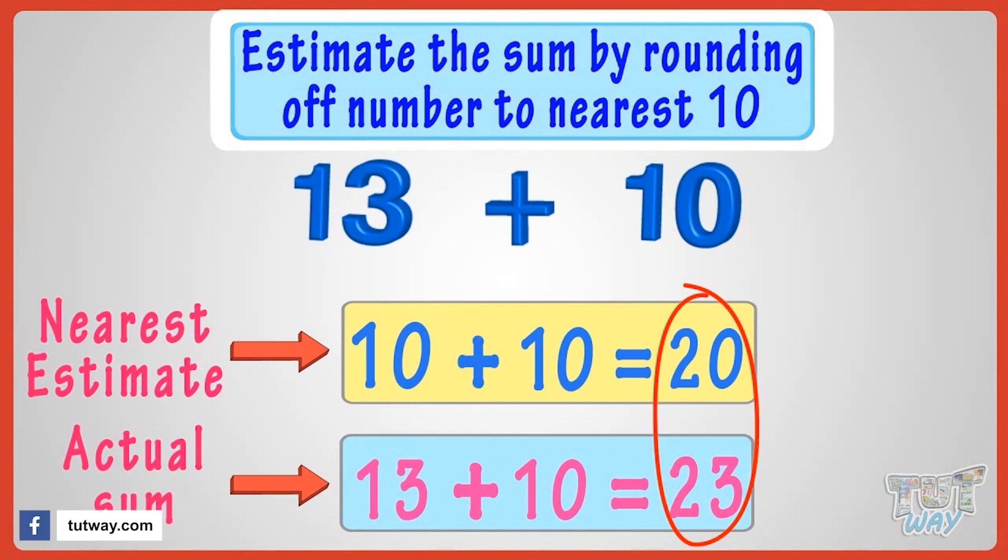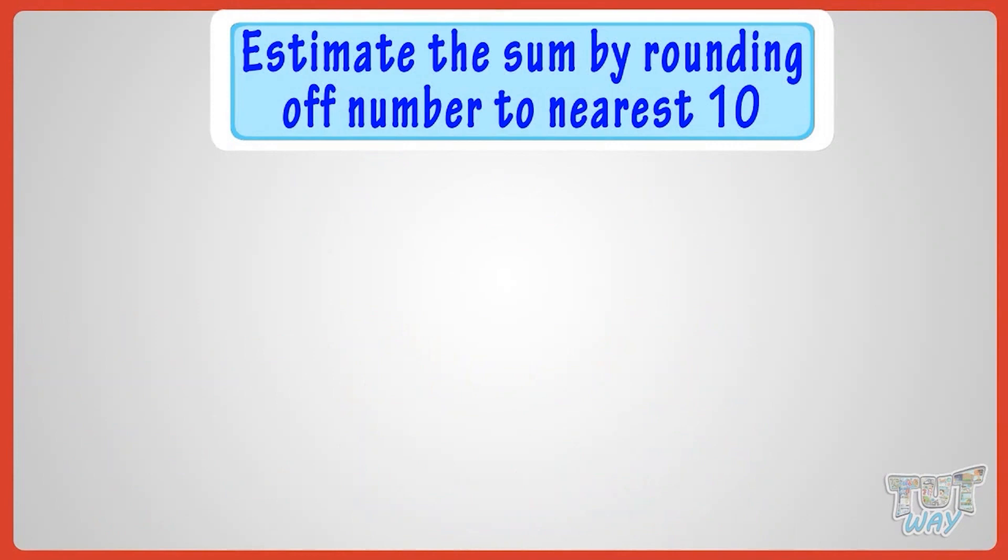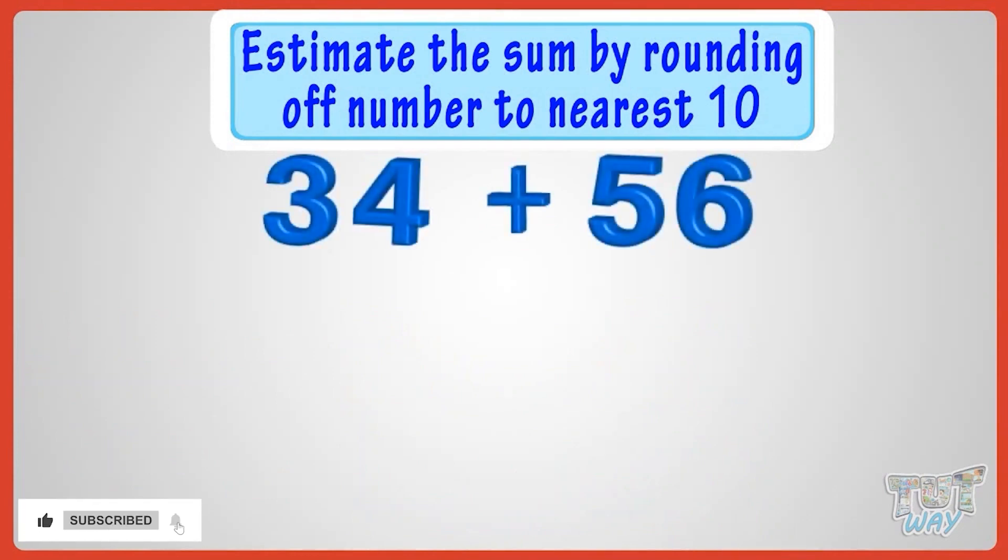Now, let's take another example. You have to add thirty-four and fifty-six. Here, both numbers are midway between two tens, so we will round them off.